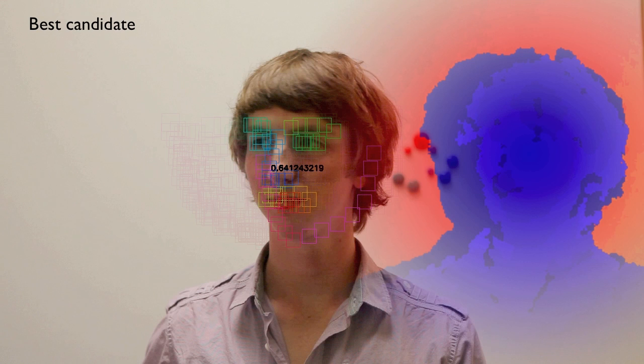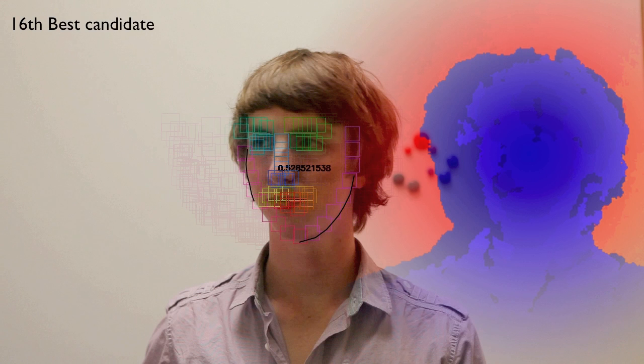When depth data is available, however, we can use this to reason about which of the candidates is correct. This speeds up computation, since we can immediately prune entire regions of the image which we know cannot contain a good candidate.